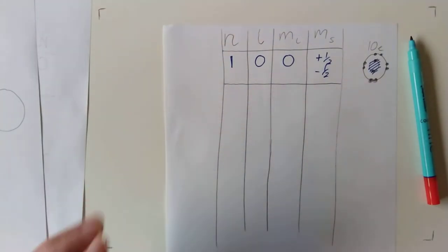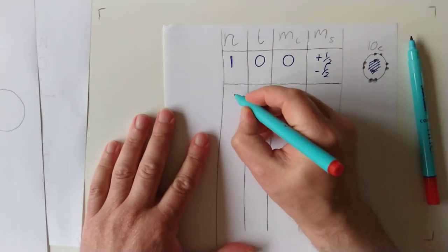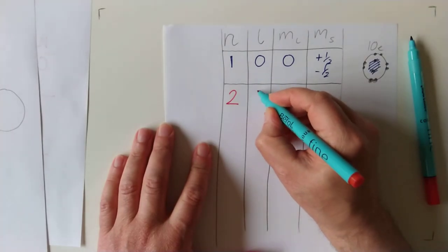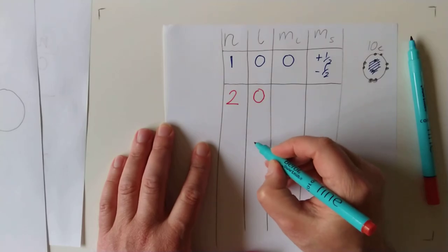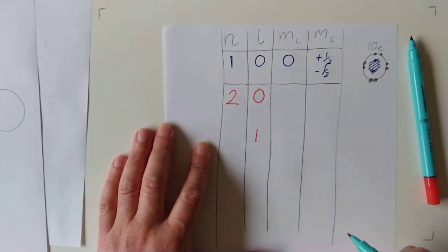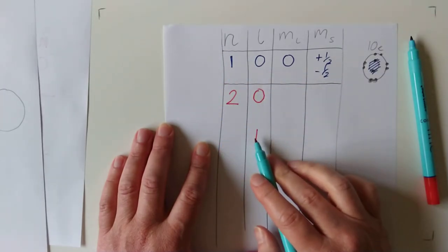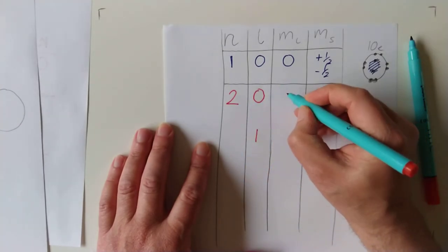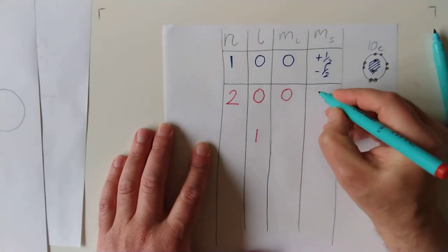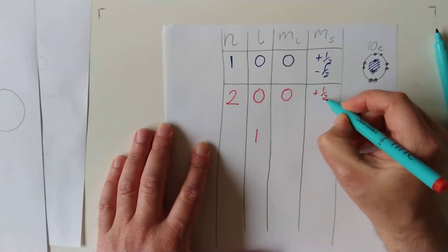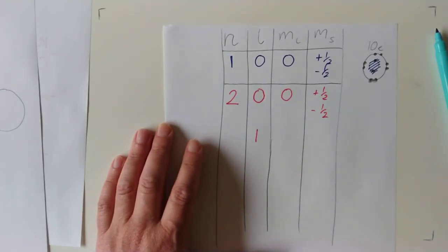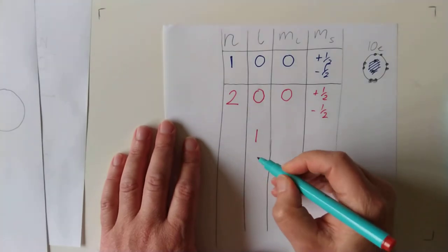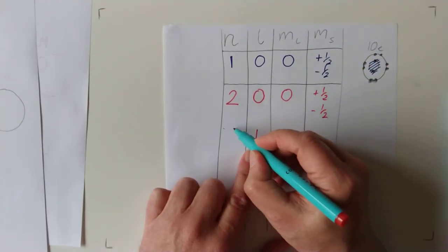Let's move on to the second layer. Now, if n is now 2, L can be 0, and L can be 1, because L can be 0 up to n minus 1, and n is 2. ML, let's address ML for this one here. We're stuck at 0 as well. And we can have two values for MS. We can have positive 1 half, and we can have negative 1 half. I'm just going to cut it on there, sorry.